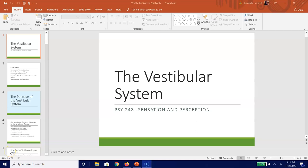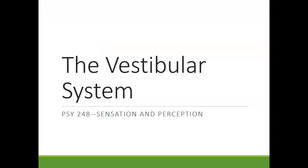Hey folks, it's Dr. Gilchrist here. We are finally done with our discussion of hearing and now we're going to move on to some of our other different bodily senses. We're going to start with a discussion about the vestibular system, and one of the things that's kind of nice about the vestibular system is that it makes use of very similar structures to what we saw for hearing and a lot of the same properties.